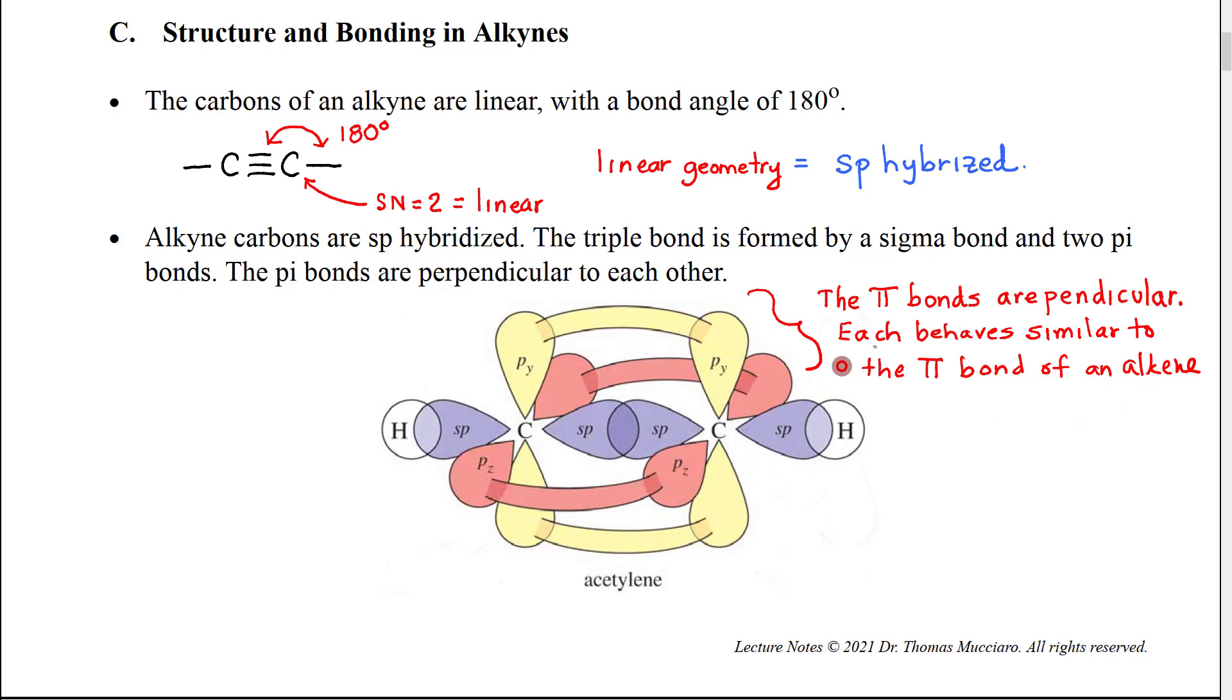The interesting thing about this then is that these pi bonds are perpendicular to each other. As a result, they don't interact. So that each will behave similar to just a pi bond of an alkene, which is a double bond that has only one pi bond. And so in fact, we're going to see that many of the reactions of alkynes basically involve two alkene-like addition reactions.